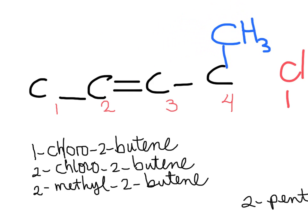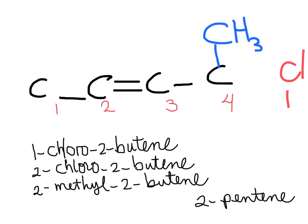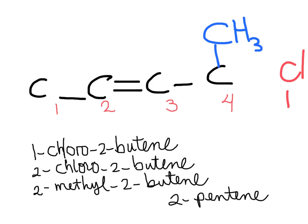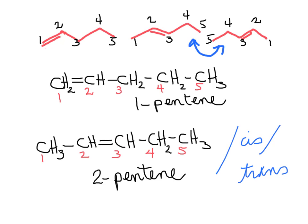But if I place the methyl on carbon number four, my substance no longer is a butene. Because now we have carbon number one, two, three, four, and five — that has become a pentene. We have seen the molecule of 2-pentene in the previous slide, which has the double bond on carbon number two and is five carbons long.